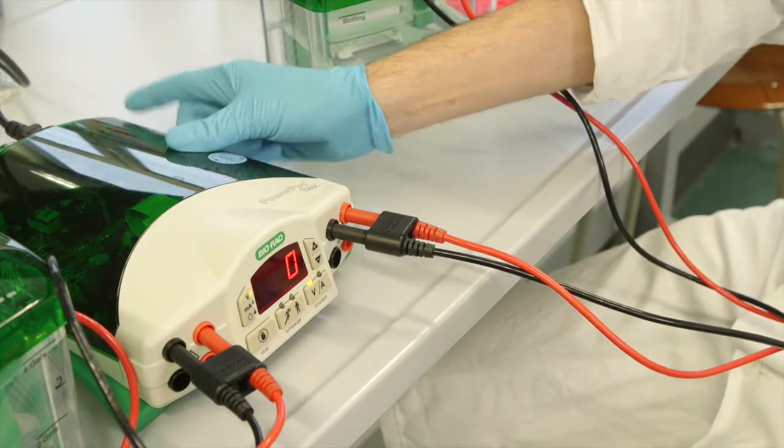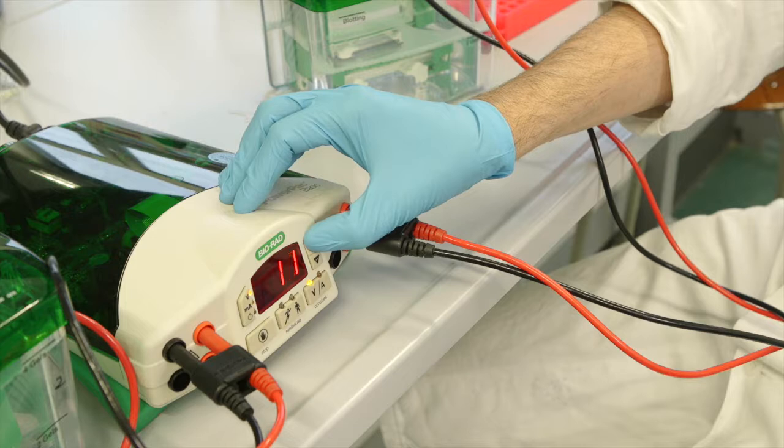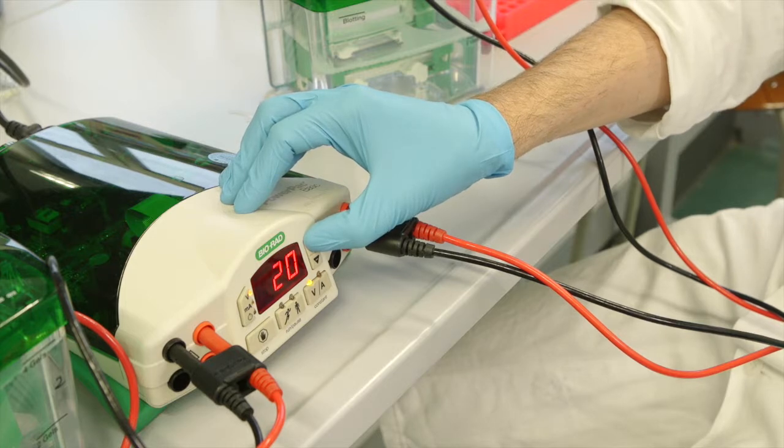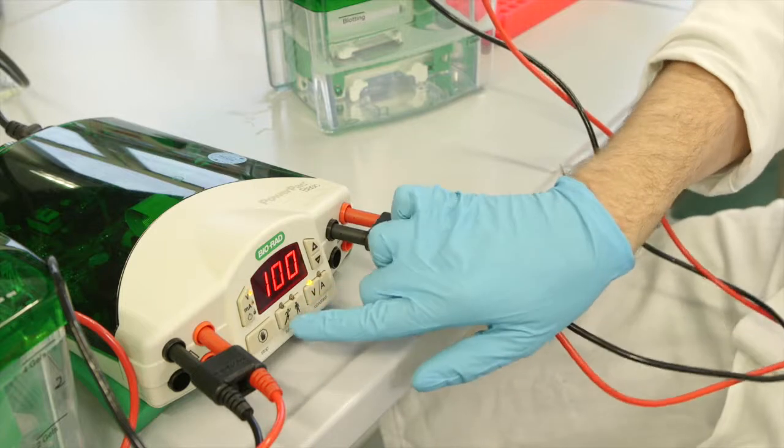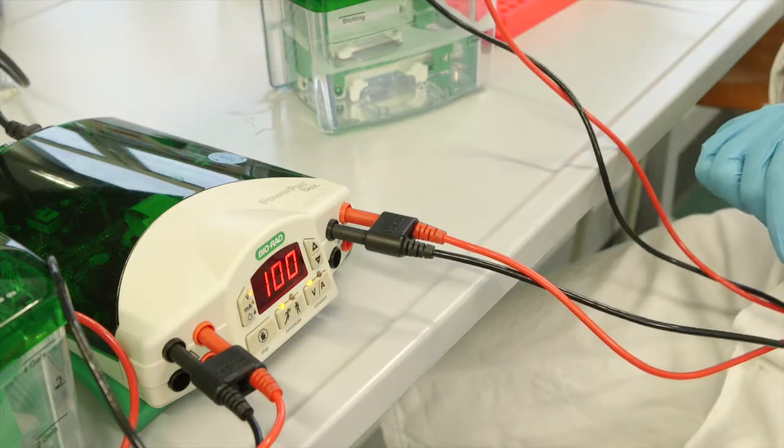Attach the chamber to the power supply. Turn on the power and run at 100 volts until the samples are completely in the stacking gel. From this point, the gel can be run at 150 to 200 volts.